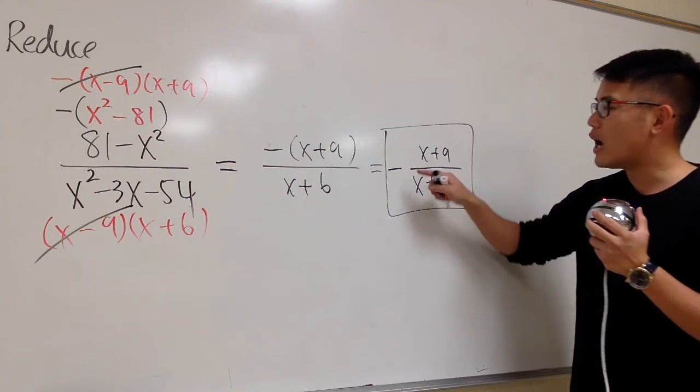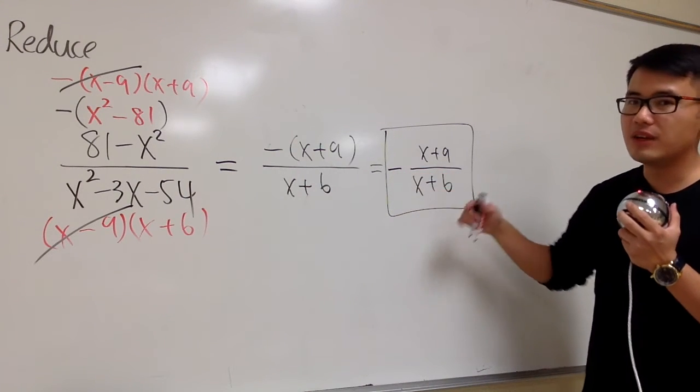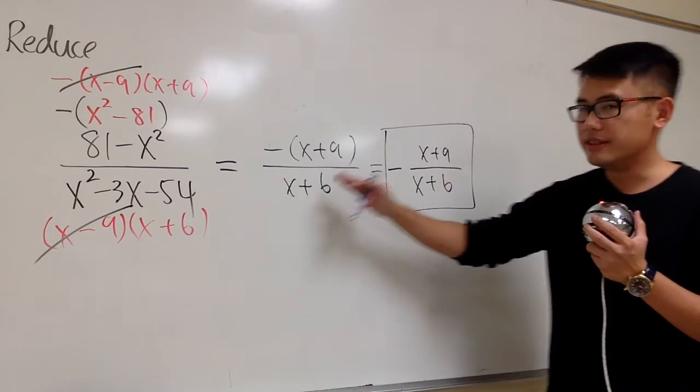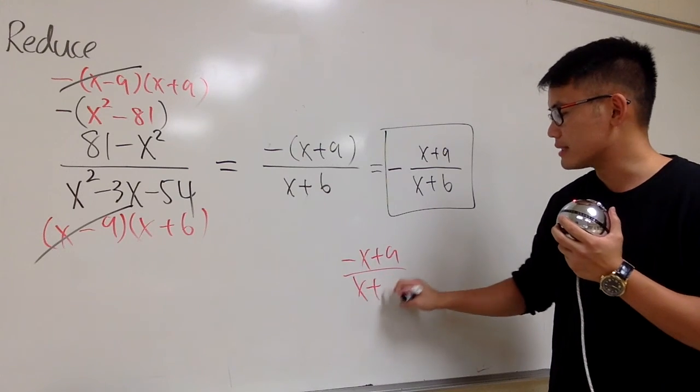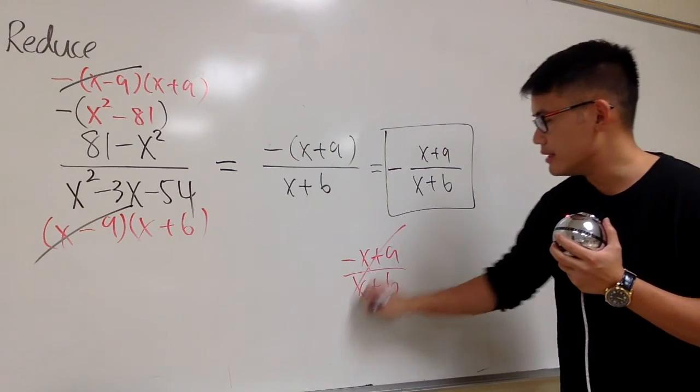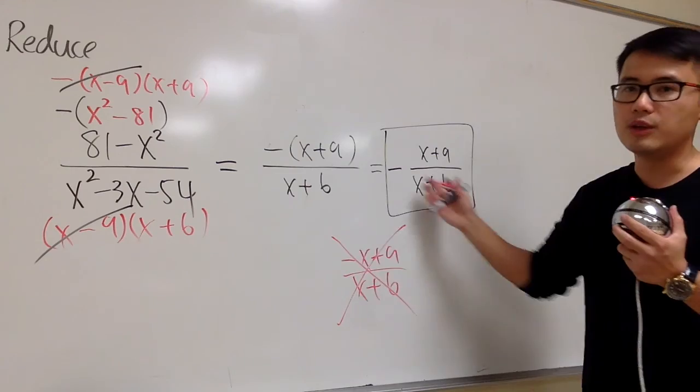So be careful with how you are going to write down this negative. This is okay. This is okay. If you have negative x plus 9 like this over x plus 6 like that, this is not the same as either one of these.